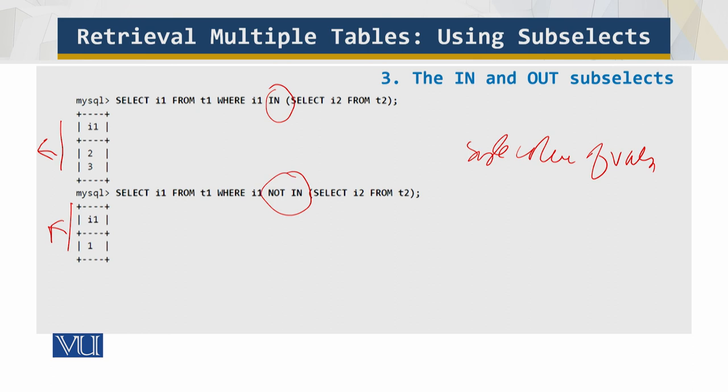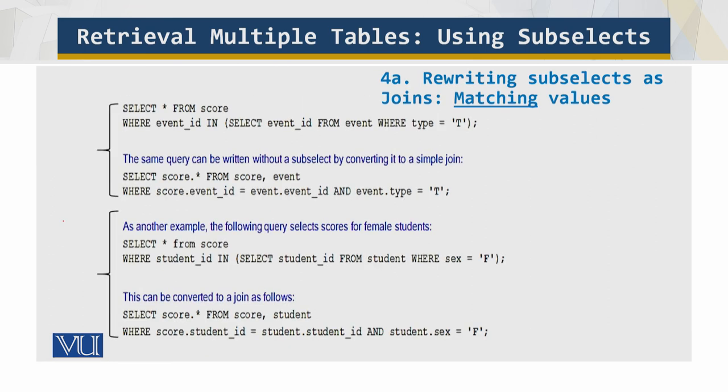Now let's look at finding matching and missing values. For versions of MySQL prior to 4.1, subselects were not available. However, it's often possible to rephrase a query that uses a subselect in terms of a join. In fact, even if you have MySQL 4.1 or later, it's not a bad idea to examine queries that you might be inclined to write in terms of subselects. A join is sometimes more efficient than a subselect. So you have this query over here using the IN, and the same query can be written without a subselect by converting it to a simple join.